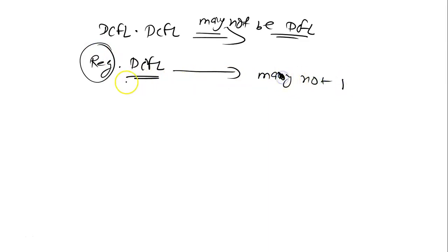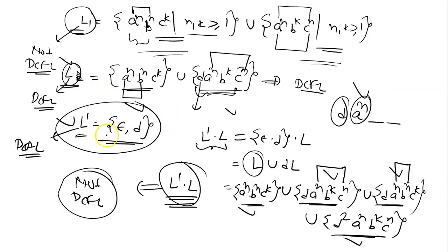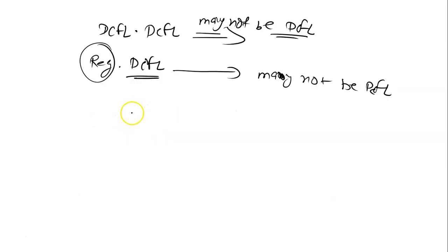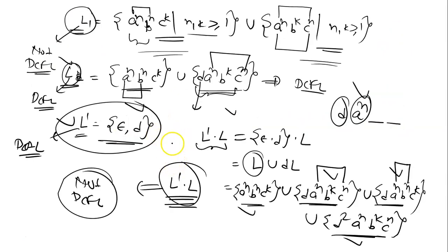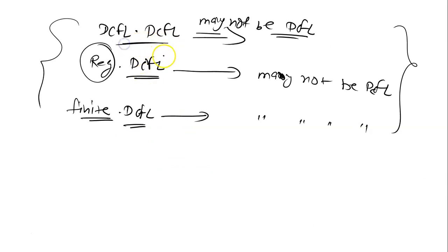So DCFL languages are not closed under concatenation with regular languages. Additionally, since L' is a finite language, DCFL languages are not closed under concatenation with finite languages either. From this single counter example, we get three results: DCFL is not closed under concatenation; DCFL is not closed under concatenation with regular languages; DCFL is not closed under concatenation with finite languages.